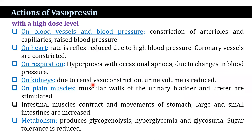In the kidney, due to renal vasoconstriction, urine volume is reduced. On plain muscles, the muscular walls of the urinary bladder and ureter are stimulated. Intestinal muscles, contractions and movements of the stomach, and large and small intestine are also increased. High doses of vasopressin produce glycogenolysis, hyperglycemia, and glycosuria.